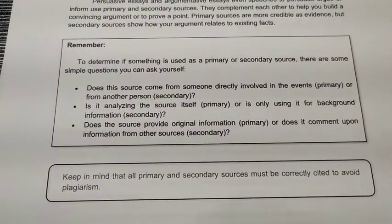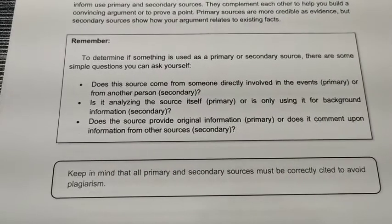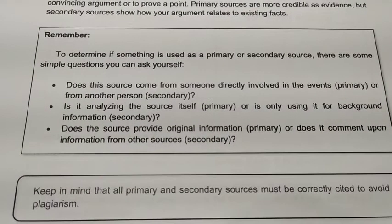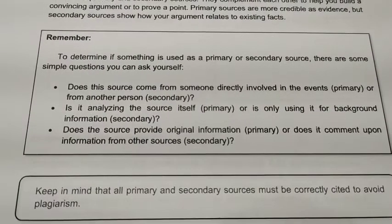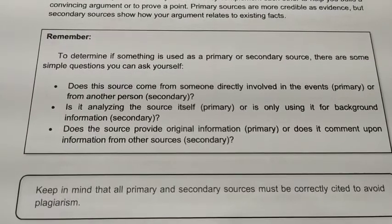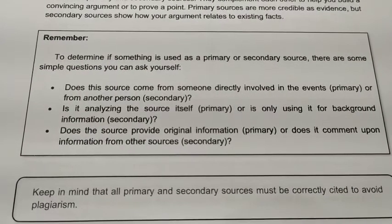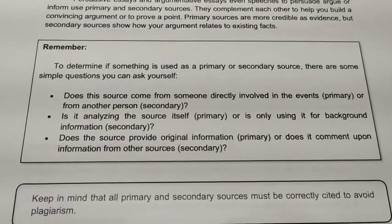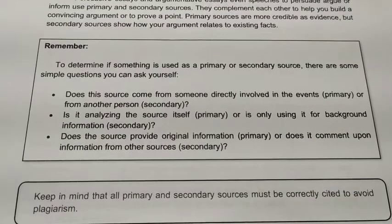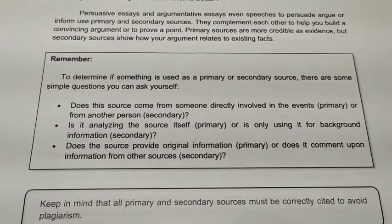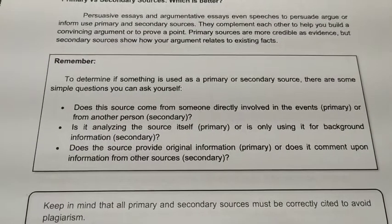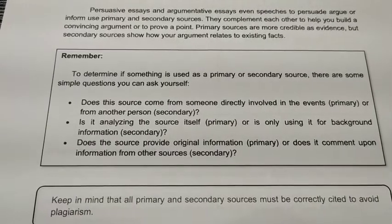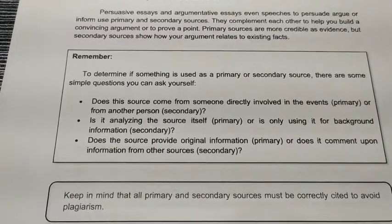To determine if something is used as a primary or secondary source, ask yourself these simple questions: Does this source come from someone directly involved in the events or the one who experienced it? Then it's primary. Or from another person? Then it is secondary. Is it providing original information? That is primary. Does it comment upon information from other sources? Then secondary. Remember: primary means the one who experienced a particular situation is the one who wrote it. Secondary means the writer is explaining, summarizing, or interpreting a particular situation, but he or she did not experience it.